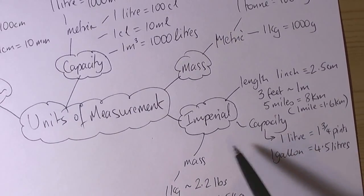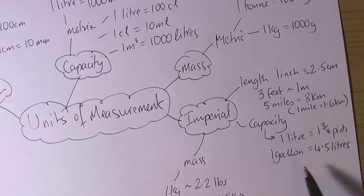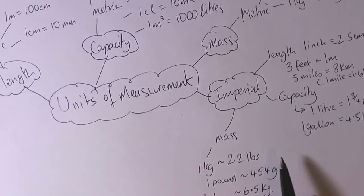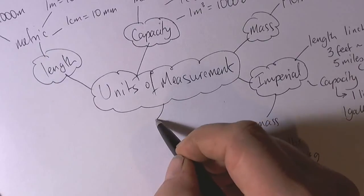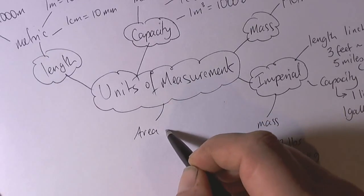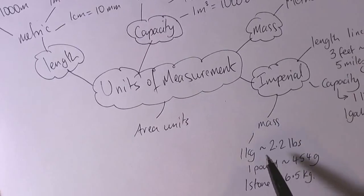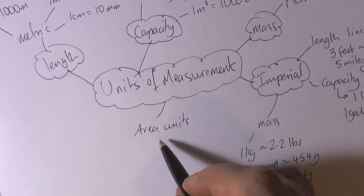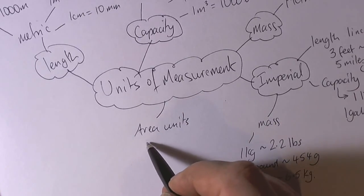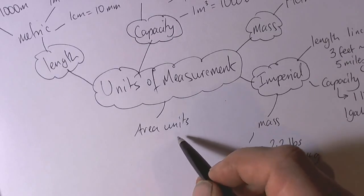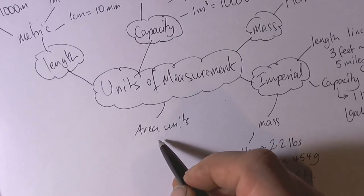So those are the common imperial ones that keep coming up in your exams. There are also area units. These are more C grade and beyond, but they are important to know because they can come up on both foundation and higher exams.